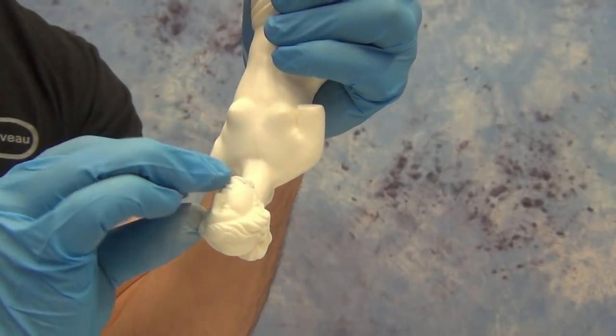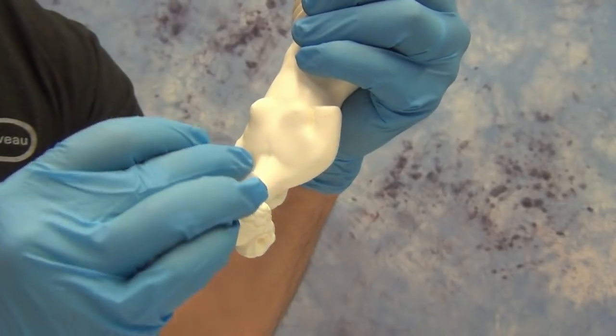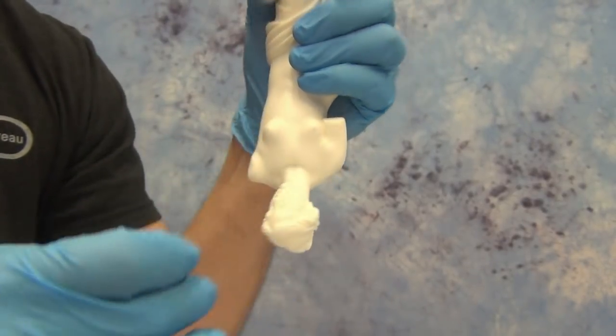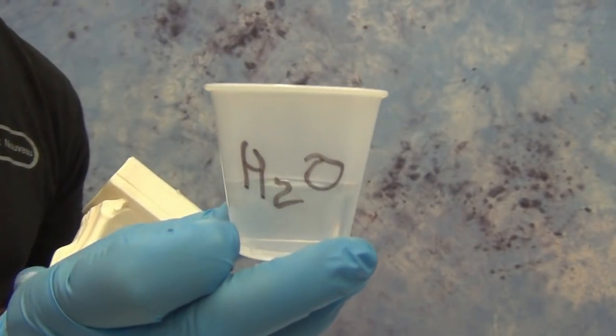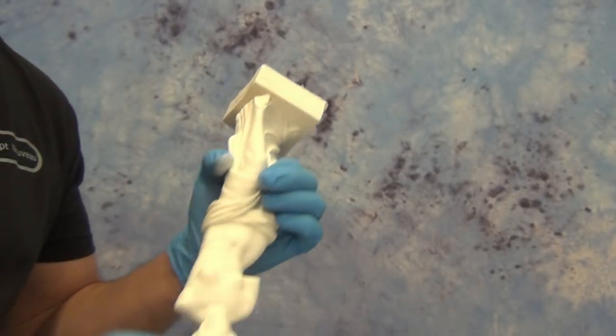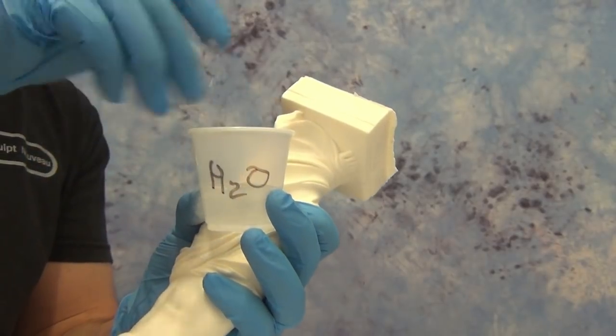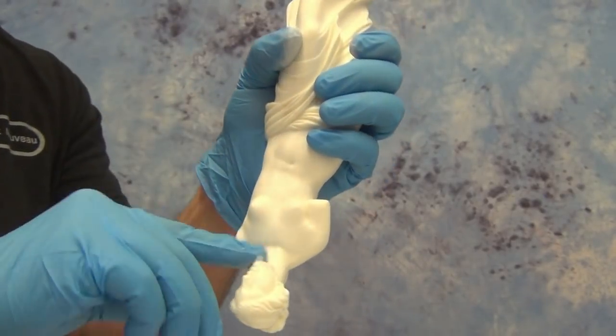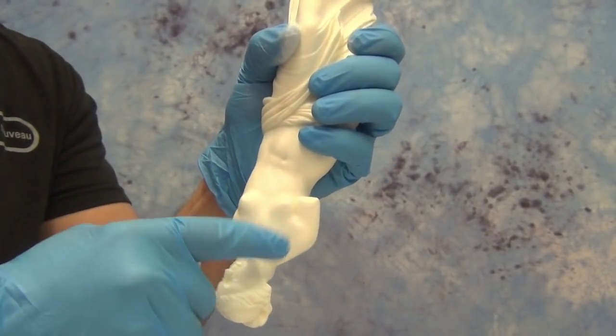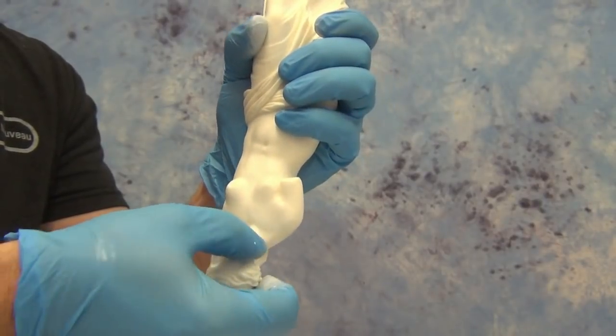Once you've got that in place you can use water to smooth it out or to texture it a little bit. Personally, because of that fast working time, I just do a minimal amount of texturing and smoothing and then let it set up completely and do the rest of the work with the Dremel tool. Just like the baking soda and super glue method, once this cures completely it's going to behave just like the cast resin part.